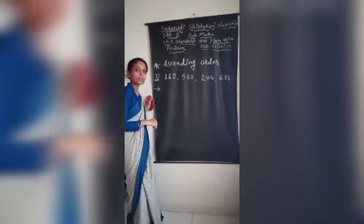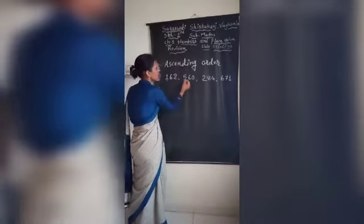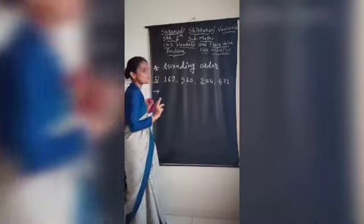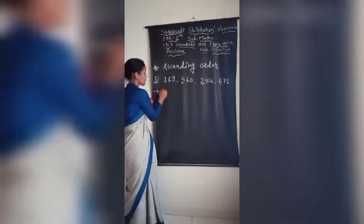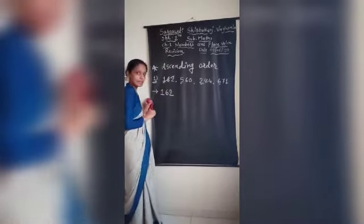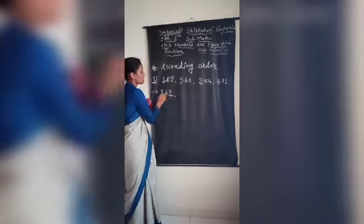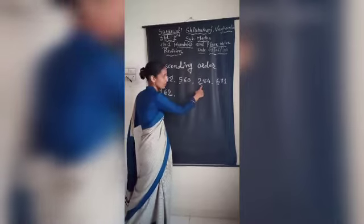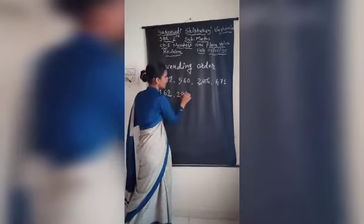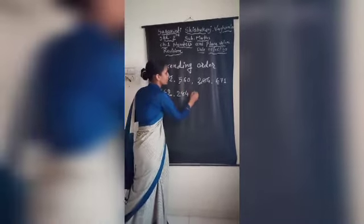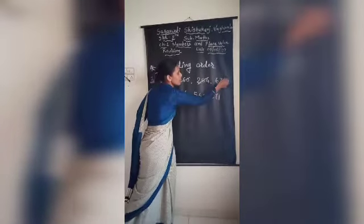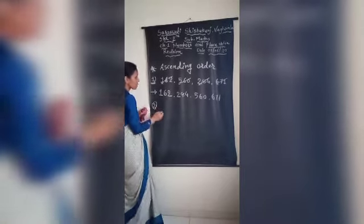First check the hundreds place digit of each number: 1, 5, 2, and 6. In ascending order we go from smaller to bigger, so the smallest hundreds digit is 1 — write 162 first and cut it. After 1, the next smaller digit is 2 — write 284 and cut it. Then 5 — write 560 and cut it. The last one is 671. Cut that too. That is all about the first ascending order example.